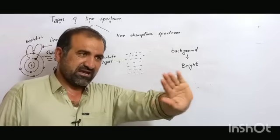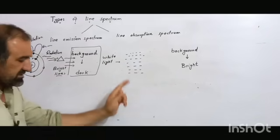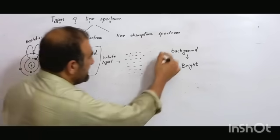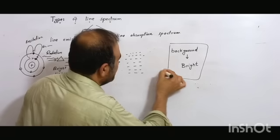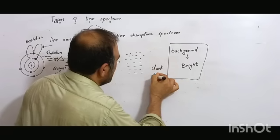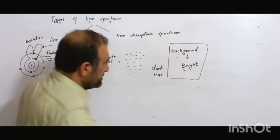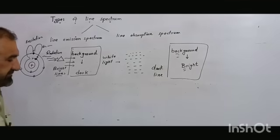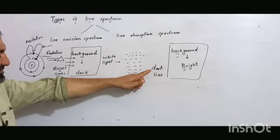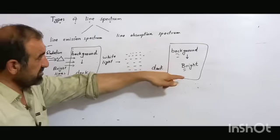The absorbed wavelengths cause dark lines to appear. Those dark lines appear on the bright background. When absorption occurs, dark lines will appear on the bright background.